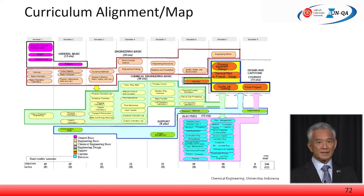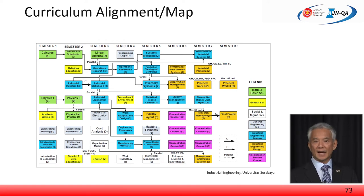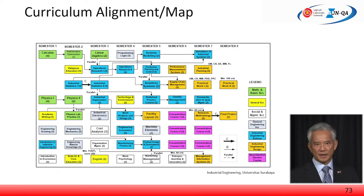Another good example is the curriculum map of the Industrial Engineering Program of the University of Surabaya, circa 2014. Read it similarly to the previous slide: the various types of courses, the sequencing and timeline, the colour grouping, and so on. There could be as many variations as there are curriculum maps. What is important is the flow and the course groupings over the periods of study.